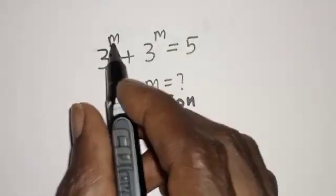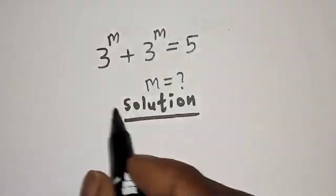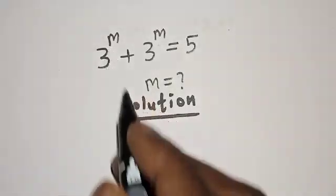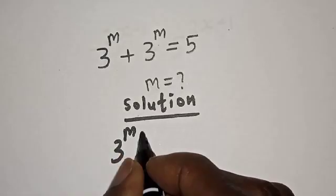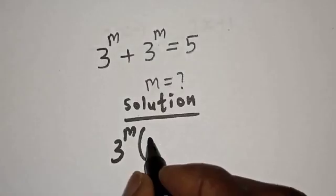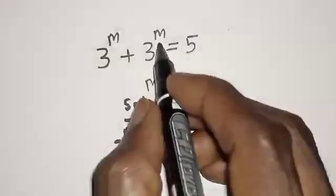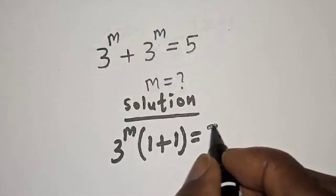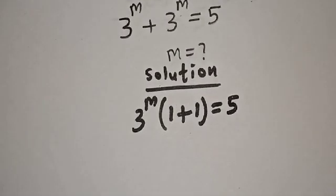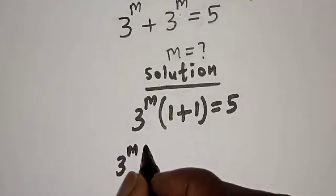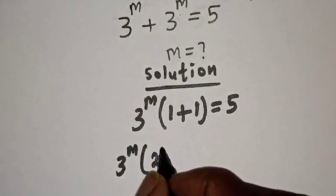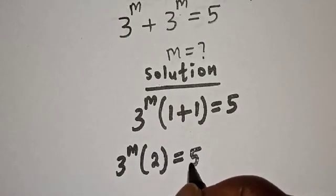We have the given equation 3 raised to power m plus 3 raised to power m equals 5. From here, 3 raised to power m is common, let's bring it out. We have 3^m times (1 + 1) equals 5, which simplifies to 3^m times 2 equals 5.